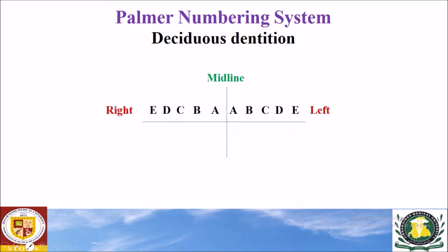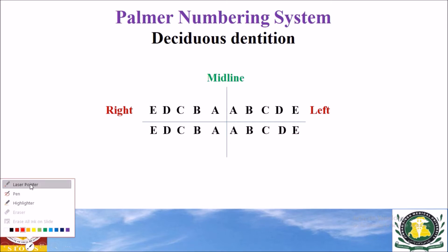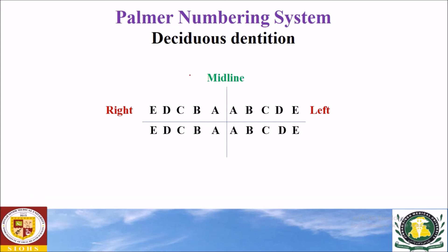Now we will discuss the Palmer notation system for the deciduous dentition. We use capital alphabets that start from the midline — A indicates the maxillary right central incisor through E, which indicates the maxillary right second molar. The same alphabets are used in the left maxillary quadrant and in the mandibular quadrant.